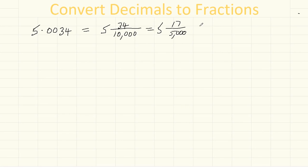If we wanted to convert that to an improper fraction, it's 5 times 5,000 plus 17. So that's 25,017 over 5,000.